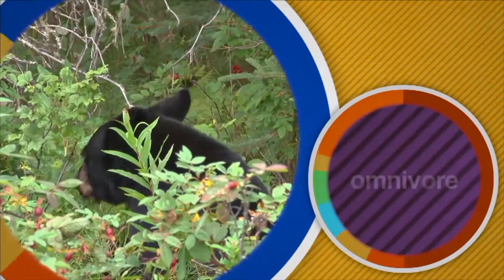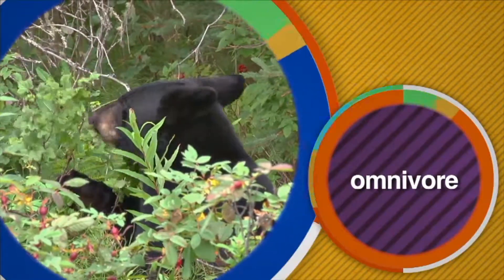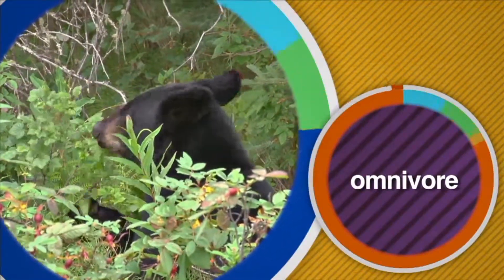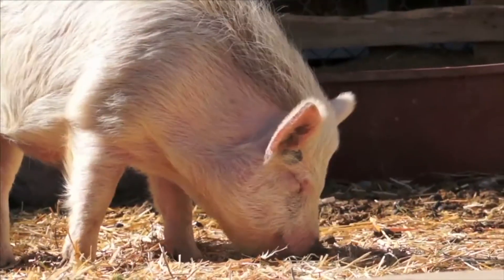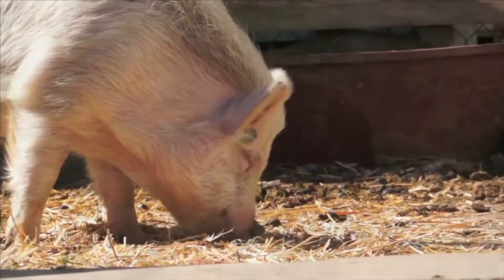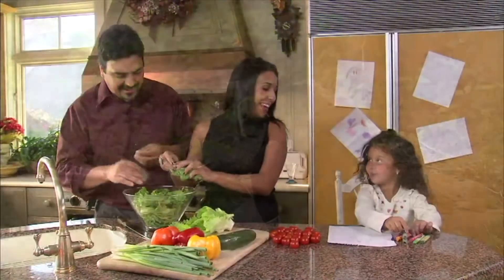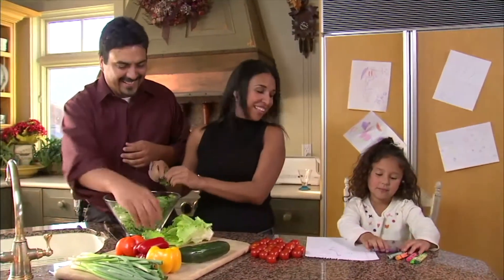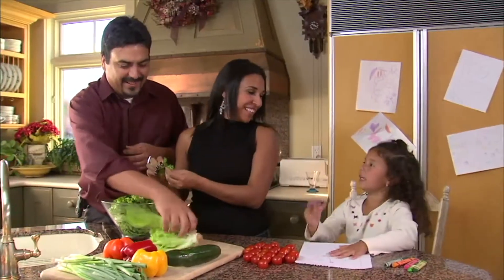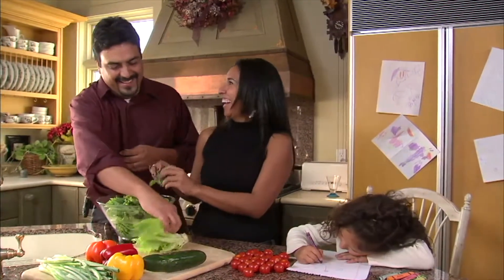Some consumers are omnivores. Omnivores eat both plants and animals. Bears are omnivores. Pigs, chimpanzees, and humans are omnivores too. Most people eat both plants and animals to get the energy and nutrients they need.